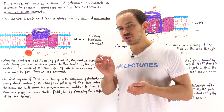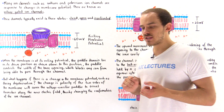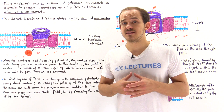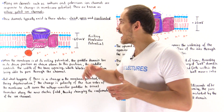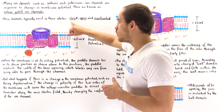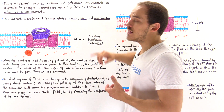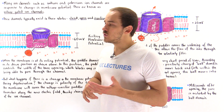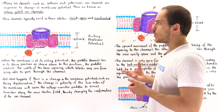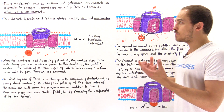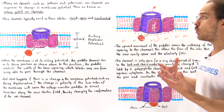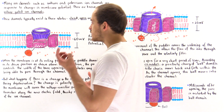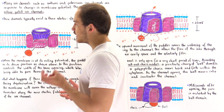There are three main conformational states that voltage-gated ion channels can exist in: the closed state, the open state, and the inactivated state. Let's begin by focusing on the closed state, using a voltage-gated potassium ion channel as our example.